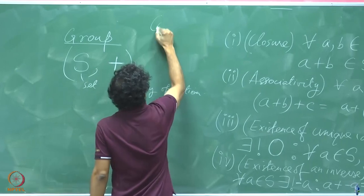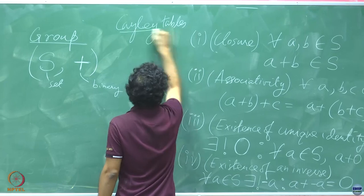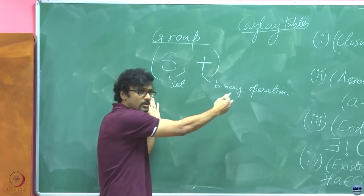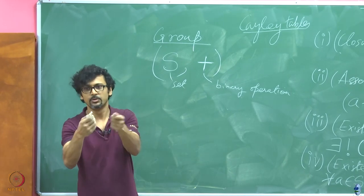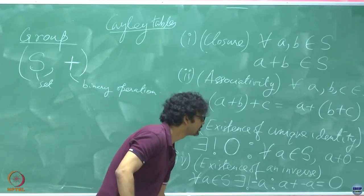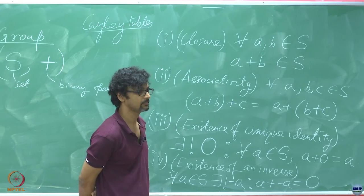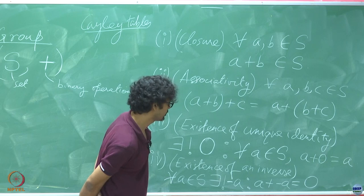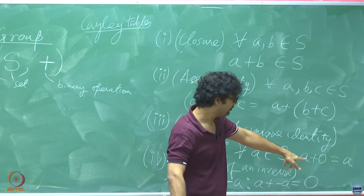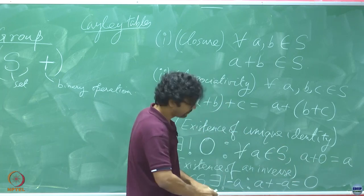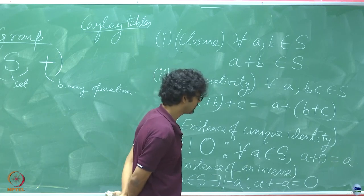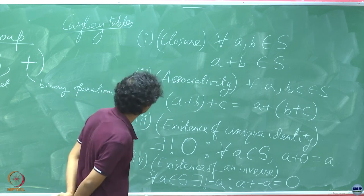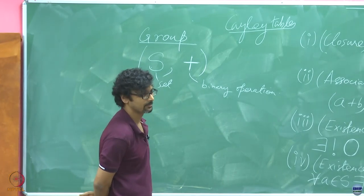In fact, there are things called Cayley tables. If you are interested, you can look them up. Cayley tables basically describe for finite number of elements in a set with an operation, they actually tell you what happens when you take them two at a time and what the resultant is. For identity as well as inverse, are the left operations also part of the condition or does that follow? You will have to impose that condition. We have not talked about commutativity yet.